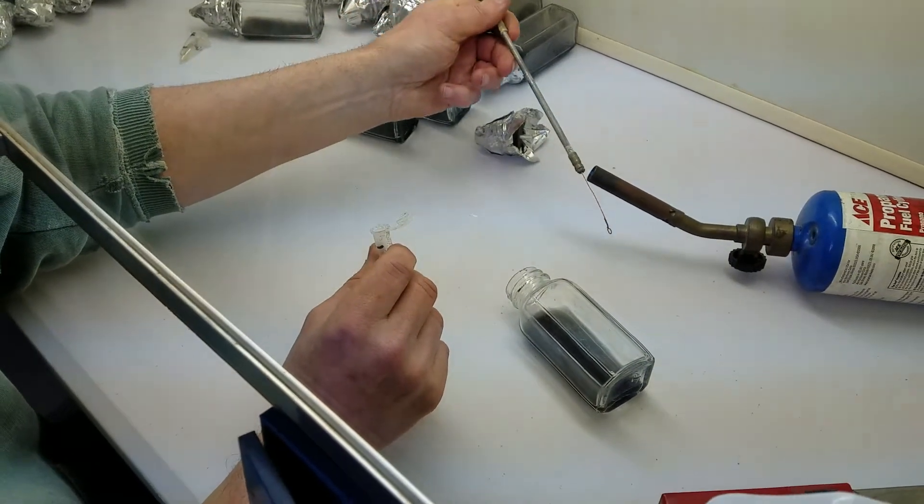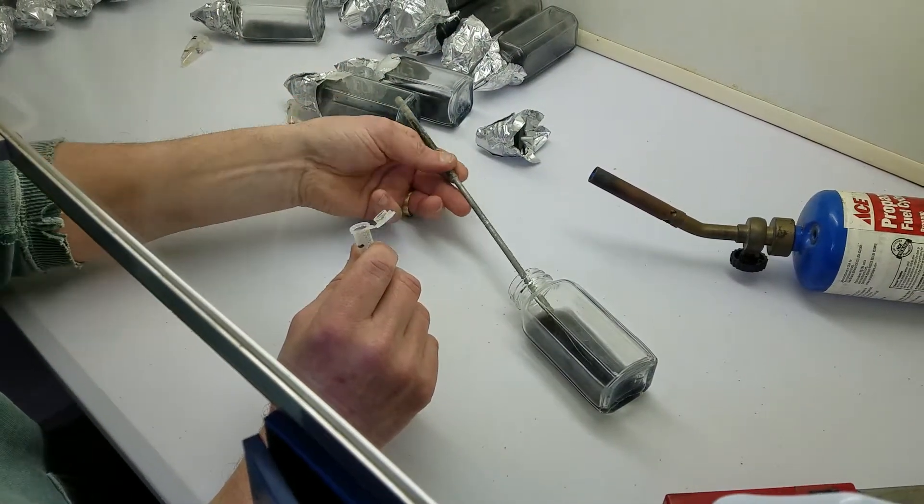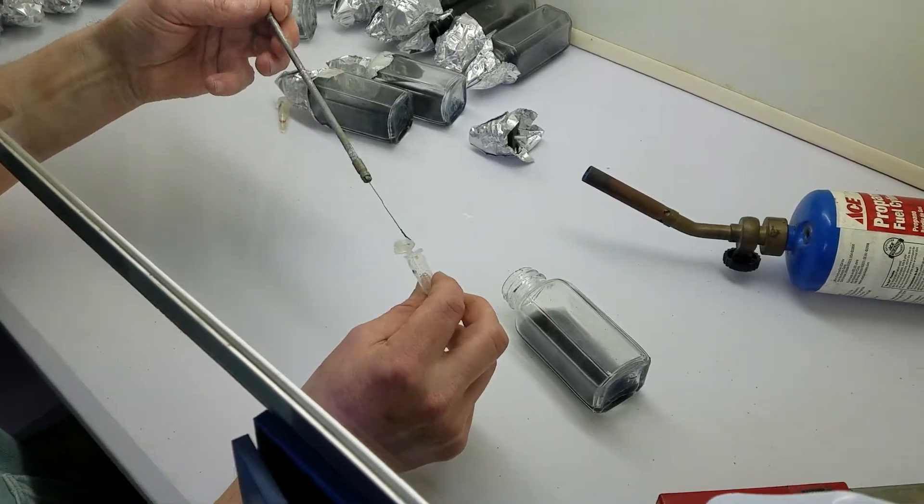What I'm doing is flaming to sterilize. It also kills any seed that might be left from the last time. And then I cool it off quickly on the agar so that I don't cook the seeds before I sow them.